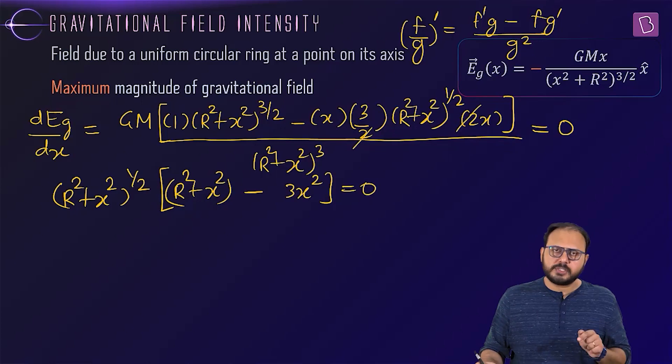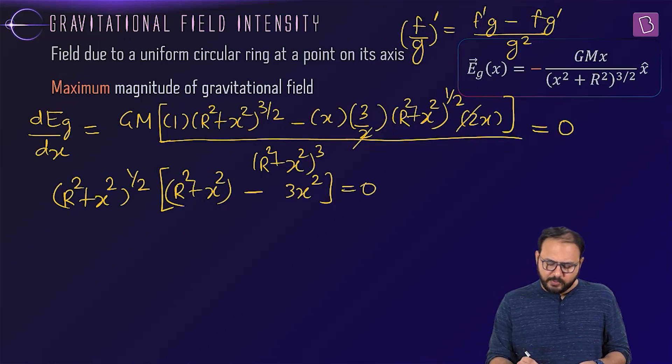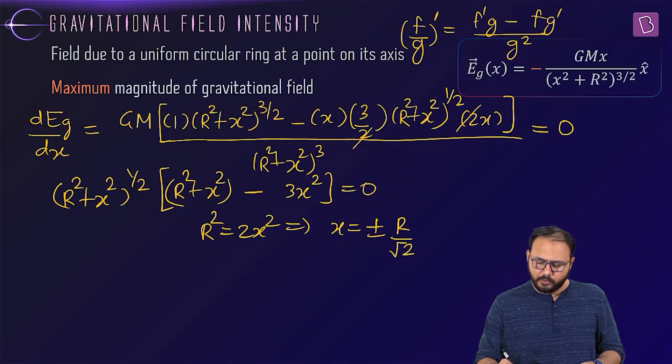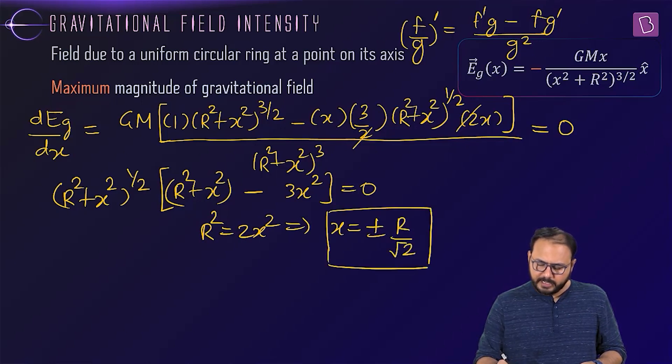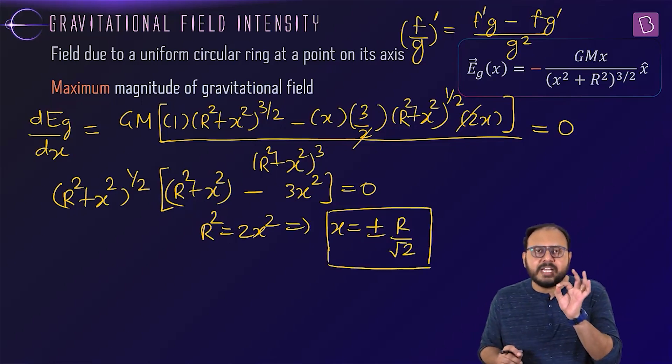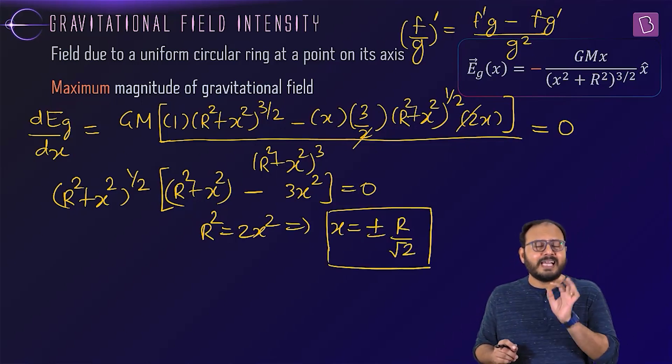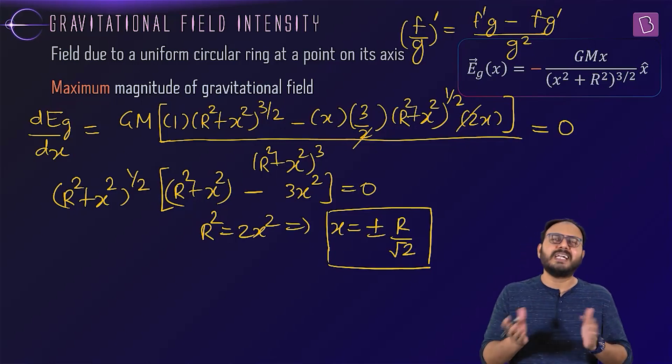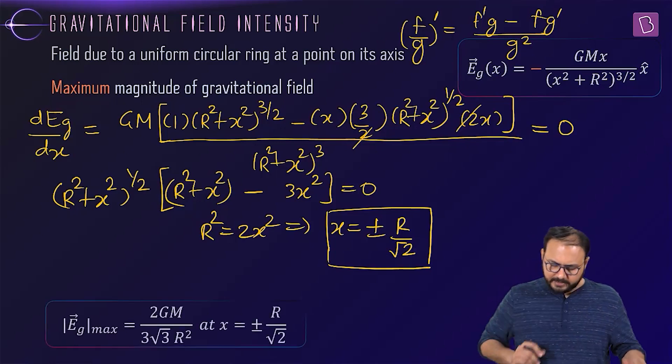Even the coefficient also not equal to 0. Right. So r square equal to what? 2x square. That implies x equal to what? Plus minus r by root 2. Get it or not? Magnitude of gravitational field at an axial point for a ring reaches its maximum value at plus or minus r by root 2. That's fairly obvious. Right. Because two sides are there. That's why. Click. Here we go.